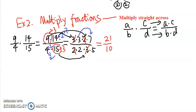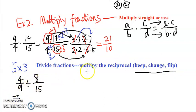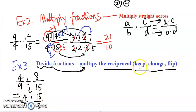Next, let's look at how to divide fractions. The rule is multiply by the reciprocal. A quick way to memorize this is: keep, change, flip. For example, 4 ninths divided by 8 over 15: you keep the first fraction 4 ninths, change division to multiplication, and flip the second fraction to get 15 over 8. That's multiplying by the reciprocal.